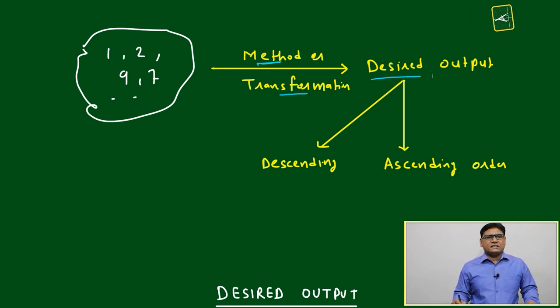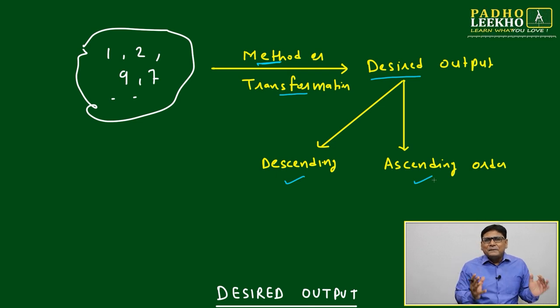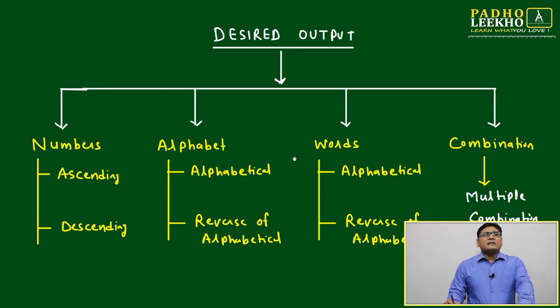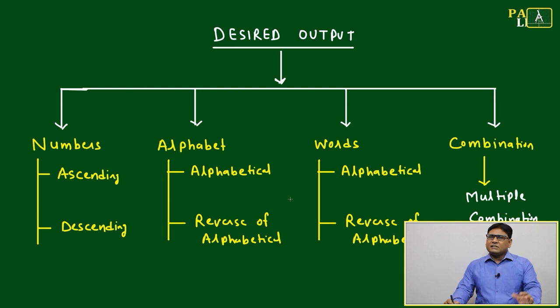In the case of numbers, desired output can be descending or ascending order - these two are famous or typical outputs, but not always. How many kinds of typical desired outputs can be? Simple common sense, no need to worry. I have written in the form of tabular format: desired output. If it is a number, then two possibilities - ascending or descending. I'm just telling a typical output; it's not always only ascending or descending.